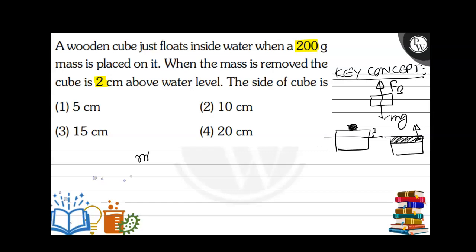So the additional mg — call it m-dash times g, where m-dash is 200 g — equals the additional buoyant force Fb-dash. Fb-dash means only that extra buoyant force now created. We are not talking about the total buoyant force; that extra buoyant force is required to balance m-dash times g.